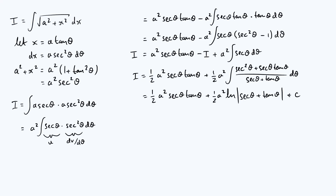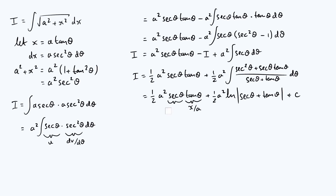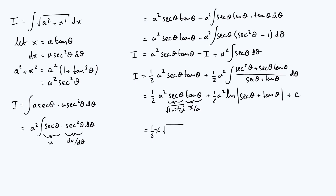Now we write everything in terms of x using the original substitution x equals a tan θ. That immediately tells us tan θ equals x over a. For sec θ, we use sec squared θ equals 1 plus tan squared θ, giving sec θ equals the square root of 1 plus x squared over a squared. Substituting back, the x · sec θ term becomes x times the square root of a squared plus x squared.